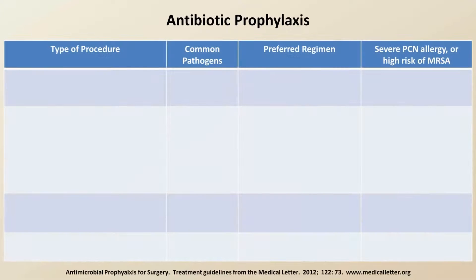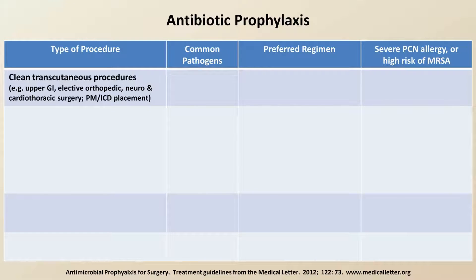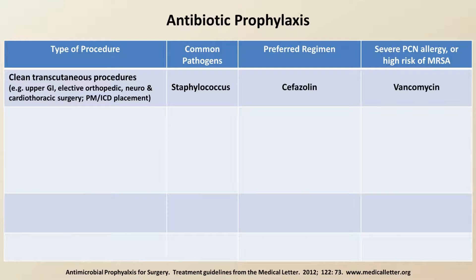The choice of antibiotic depends upon the type of procedure, as different procedures expose patients to different pathogens. Most procedures can be classified as clean transcutaneous procedures — such as upper GI tract, elective orthopedic, neuro and cardiothoracic surgery, along with pacemaker and ICD implantation — where Staphylococcus aureus is the most common pathogen leading to surgical site infections. Therefore, the preferred prophylactic regimen is cefazolin. For patients with a severe type 1 allergic reaction to penicillin or patients at unusually high risk of MRSA infection, vancomycin is an acceptable alternative.